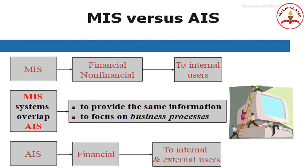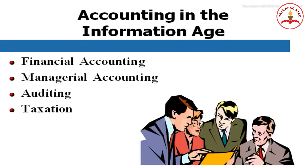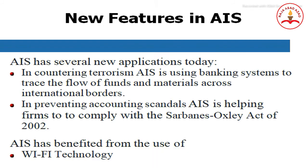Comparing MIS and AIS using a chart: in a management information system, financial and non-financial information flows to internal users; in an accounting information system, financial information flows to both internal and external users. In the information age, financial accounting, managerial accounting, auditing, and taxation are all used as accounting disciplines.